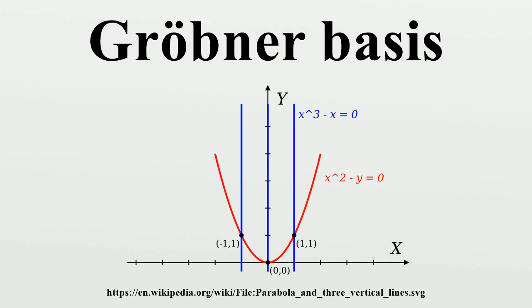Background: Polynomial ring. Gröbner bases are primarily defined for ideals in a polynomial ring over a field K. Although the theory works for any field, most Gröbner bases computations are done either when K is the field of rationals or the integers modulo a prime number.